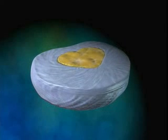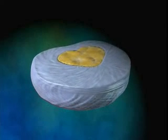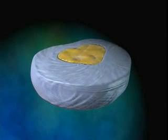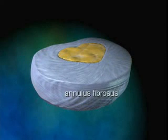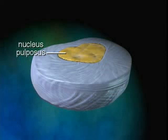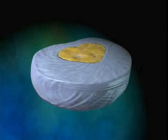An intervertebral disc consists of two distinct regions. The firm outer region, called the annulus fibrosis, maintains the shape of the intervertebral disc. The inner portion, called the nucleus pulposus, is the soft, spongy tissue that enables the disc to function as a shock absorber.